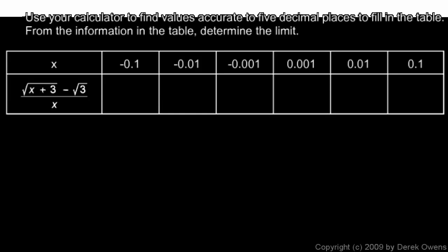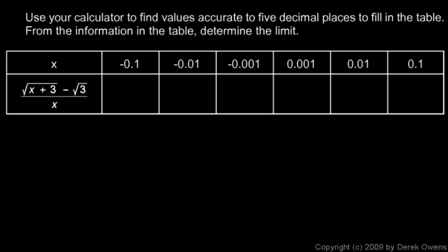We're still talking about evaluating limits and working through several examples. In this section we're going to talk about evaluating limits from a table of values. We're told to use a calculator to find values accurate to five decimal places to fill in a table, and from the information in that table, determine the limit.